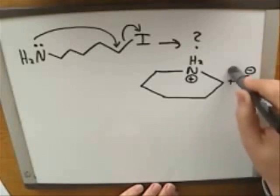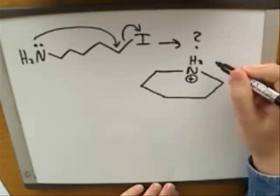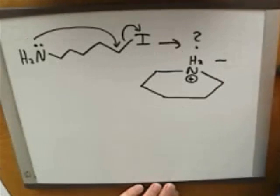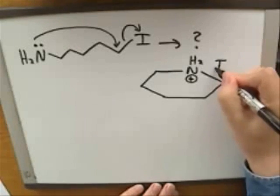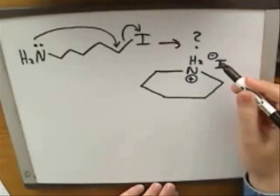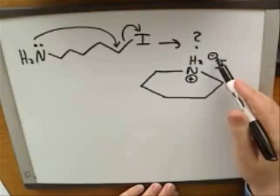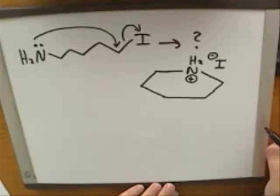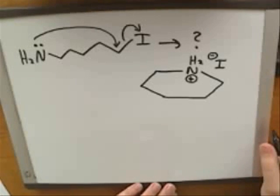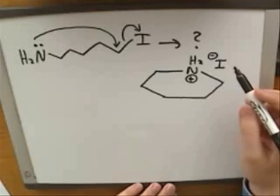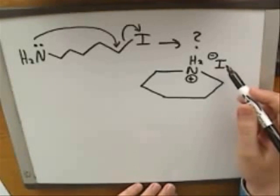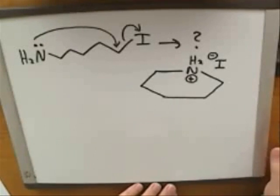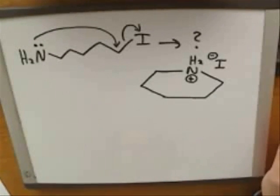Another way this might be written: the iodide might just be drawn close to the nitrogen to show the charge on the iodide balancing the charge on the nitrogen, almost as if they were an ionic compound. But certainly the important thing is that the iodide is no longer covalently bonded to any of the other atoms in the problem.